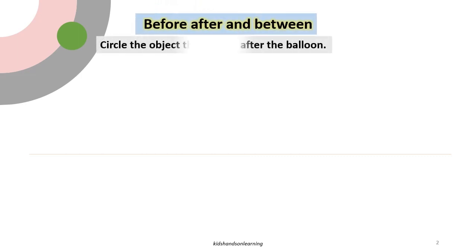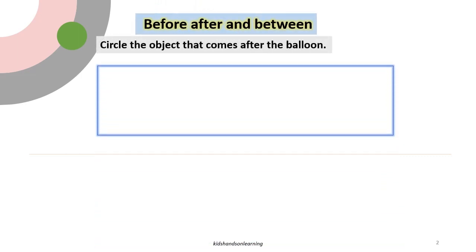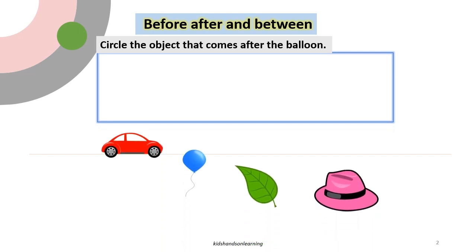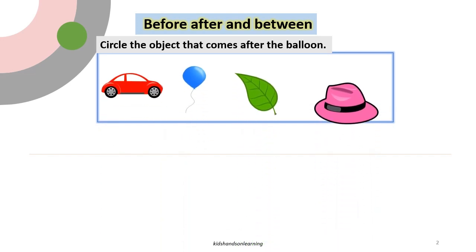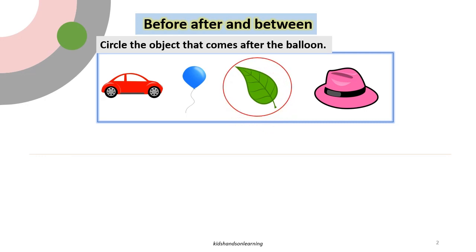Before, After and Between. Circle the object that comes after the balloon. Leaf. 2.